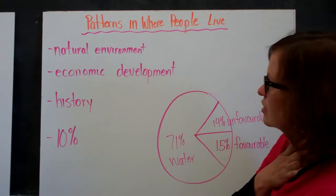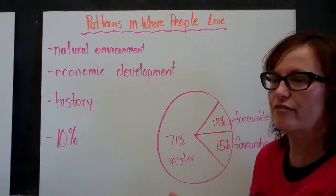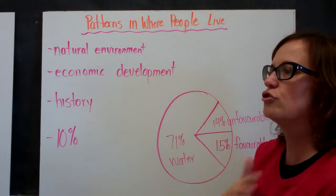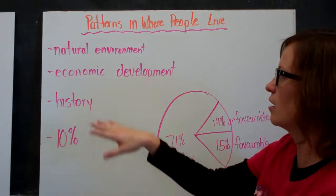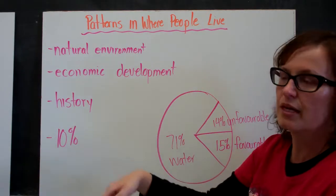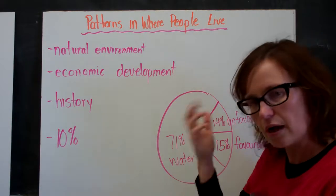One of the things that they study is the patterns in where people live. The data that they've collected shows it's usually related to one of three things or all of these things: the natural environment, economic development, and history. I'm going to go into those in detail in the next couple of slides.